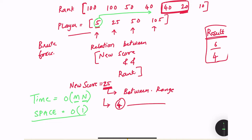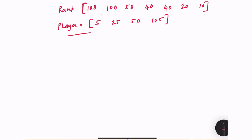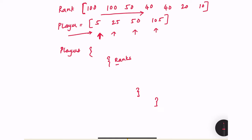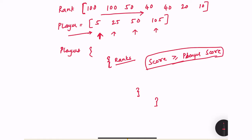Let's think about how we can optimize this to get a better time complexity. Rather than iterating through all ranks for each player's score, we can limit that iteration based on the band where it falls. We start iteration on the players, but within each iteration we have a nested loop that iterates through the ranks only until a certain condition — if the rank's score is greater than or equal to the player's score, we stop the inner iteration. This way we have all the information needed to calculate the rank.